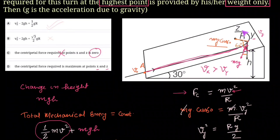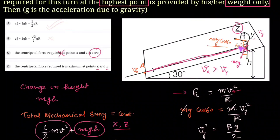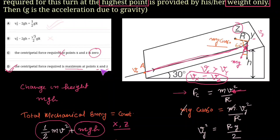Points X and Z are at the same height, so their potential energies are equal. When potential energy is the same, kinetic energy is also the same, which means the velocity at X equals the velocity at Z. Equal velocities imply equal centripetal forces. Since the velocity at X and Z is the highest during the entire circular motion, the centripetal force there is maximum. So option D is correct.